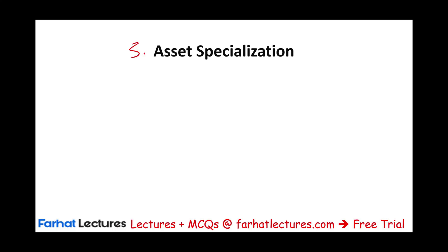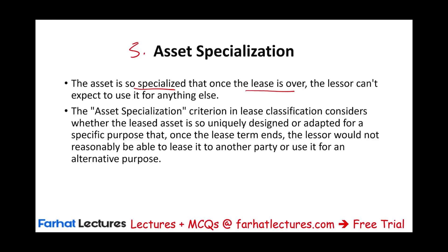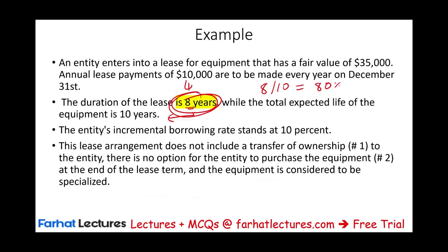The fifth criteria is asset specialization. The asset must be of such a specialized nature that the lessor cannot use it for anything else or re-lease it after the lease ends. The asset is so uniquely designed or adapted for the lessee's specific operational needs that it cannot reasonably be leased to another party. If the problem states the equipment is considered specialized, that alone classifies the arrangement as a finance lease.